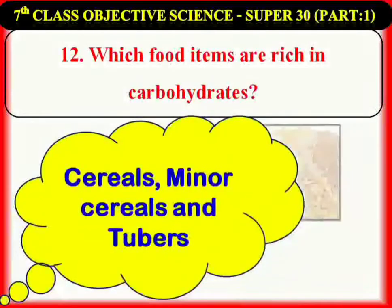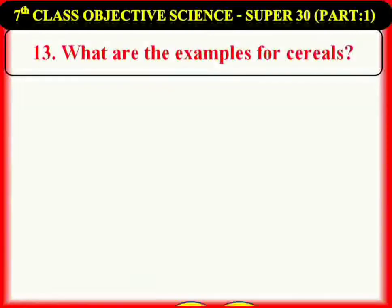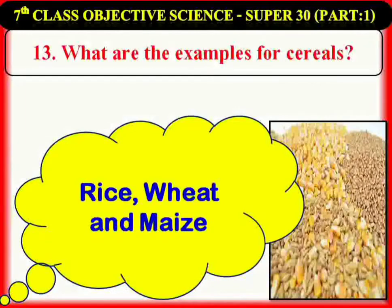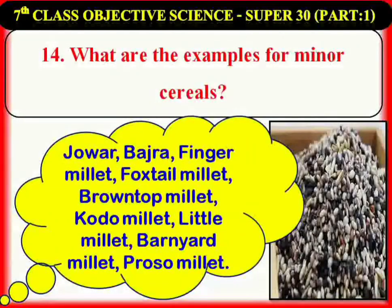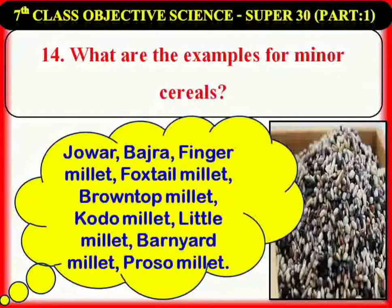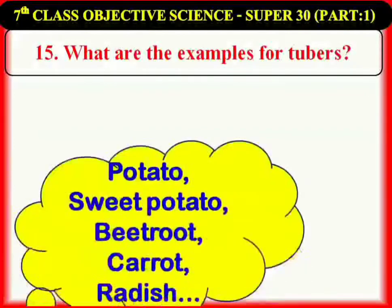Which nutrient occupies the major portion in our food generally? Carbohydrates. Which food items are rich in carbohydrates? Cereals, minor cereals, and tubers. What are the examples for cereals? Rice, wheat, and maize. What are the examples for minor cereals? Jowar or great millet (Jannalu), Bajra or pearl millet (Saddalu), finger millet or ragi (Ragulu), foxtail millet (Korralu), brown top millet (Andu Korralu), kodo millet (Arikalu), little millet (Samalu), barnyard millet (Udalu), and proso millet or common millet (Varigalu).